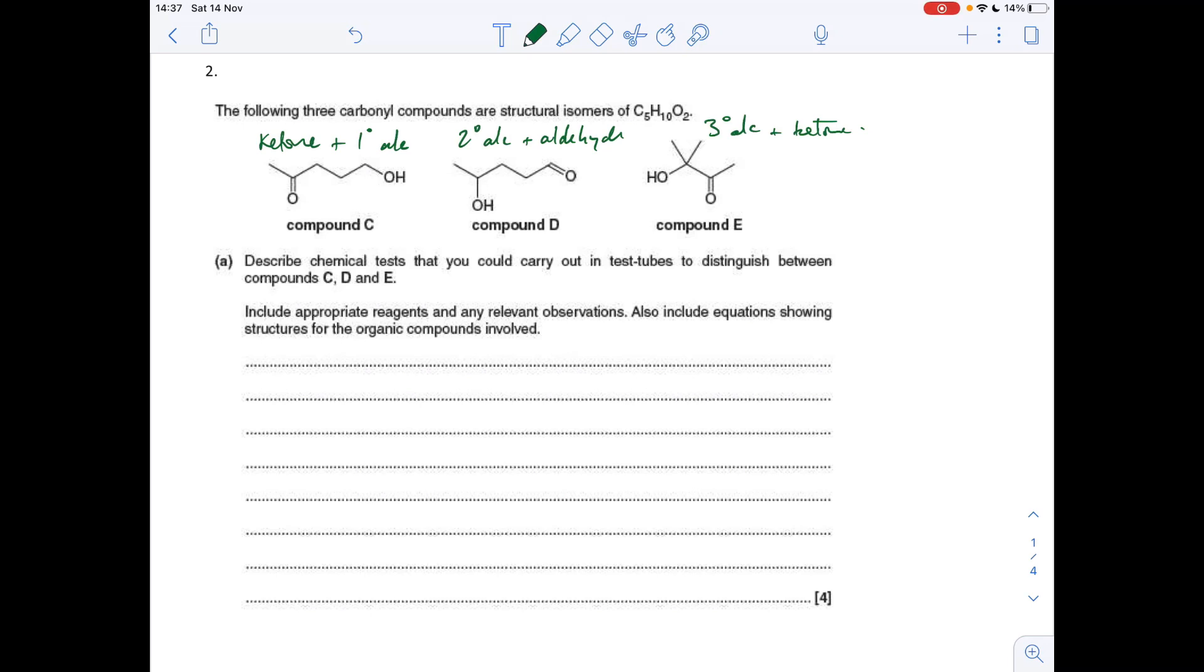The first thing I'm going to do is add Tollens reagent to all three, and that's going to identify the aldehyde because this is the only one that can produce a silver mirror. So there's that in words and the equation there.